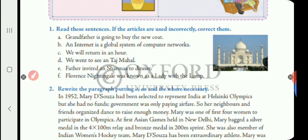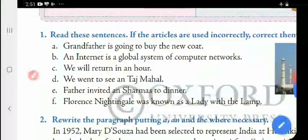Number one: 'Grandfather is going to buy the new coat.' Here, 'the' is placed wrongly. Please cut 'the' and write 'a'. The answer is: Grandfather is going to buy a new coat. Next: 'An internet is a global system of computer networks.' Please cut 'an' and write 'the'. The answer is: The internet is a global system of computer networks.